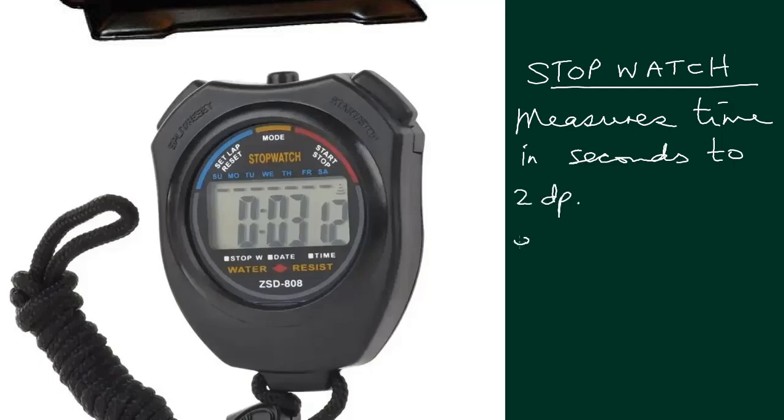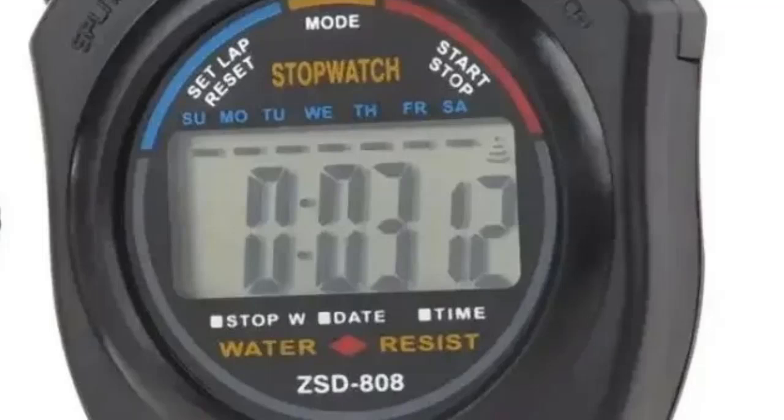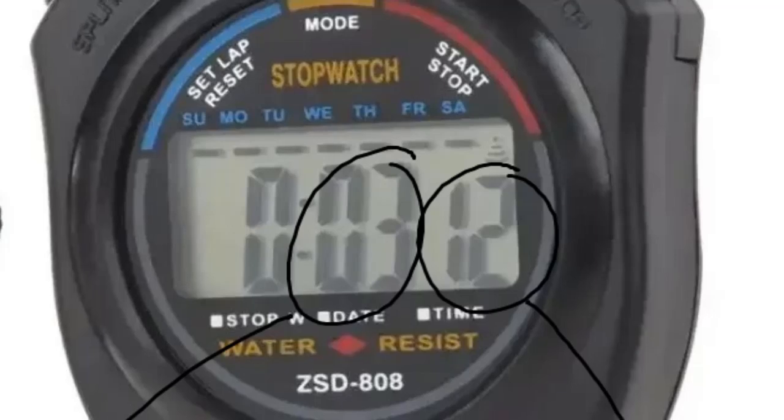Just because we record it to two decimal places, just as you see it on the screen here, 3.12 seconds. So we just record it the way it is. Of course, the first zero is representing there were zero minutes.